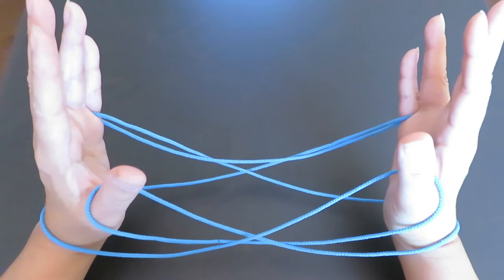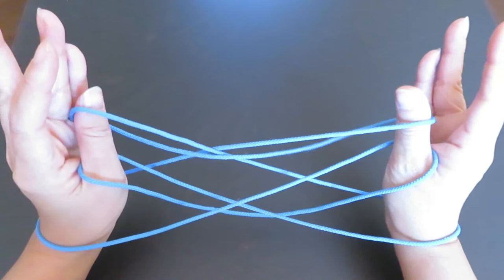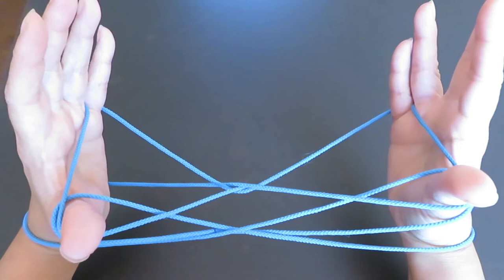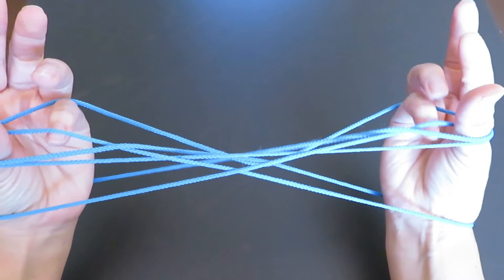Now, with both thumbs, pick these two strings in front of both pinkies, and pull forward. And then now, with both pinkies, pick this string behind the thumbs, like this.